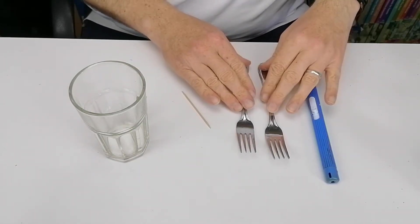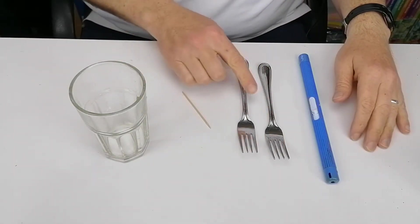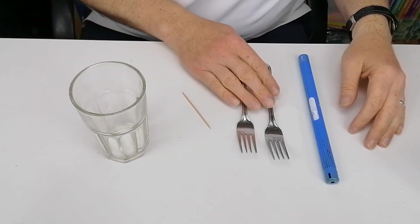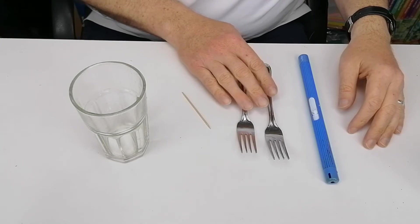We did a very similar one to this, but the two forks were balancing on a very sharp point like a bamboo skewer. I have a link to that video in the description of this video.